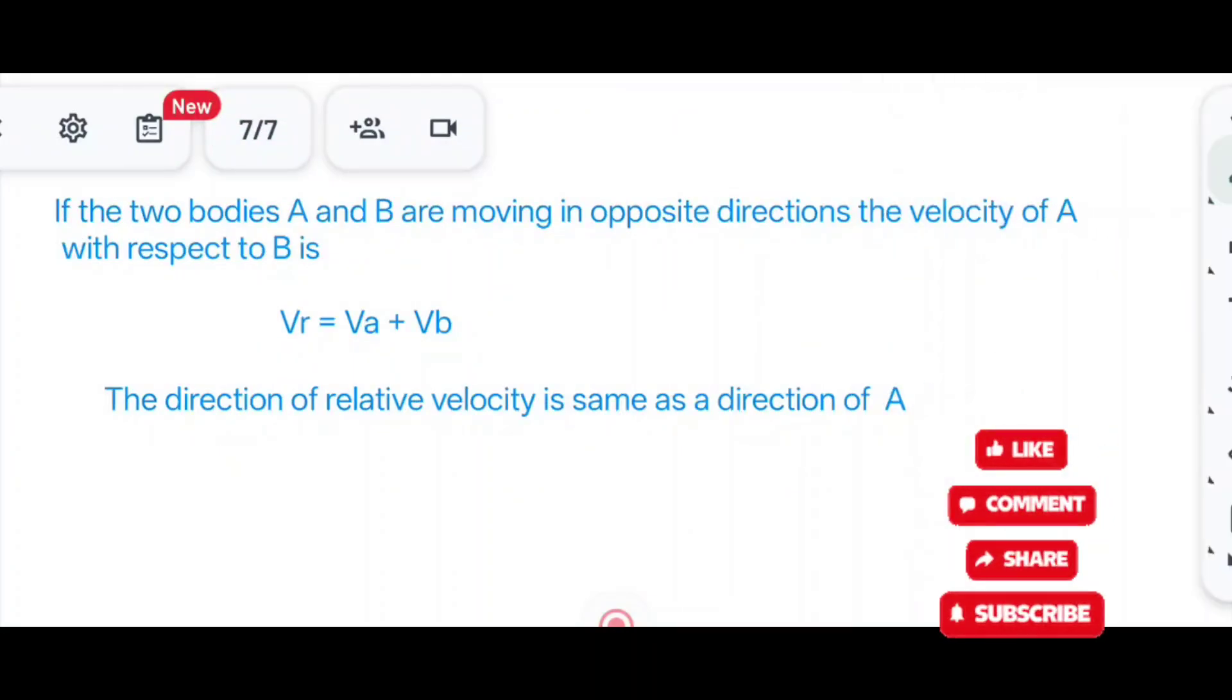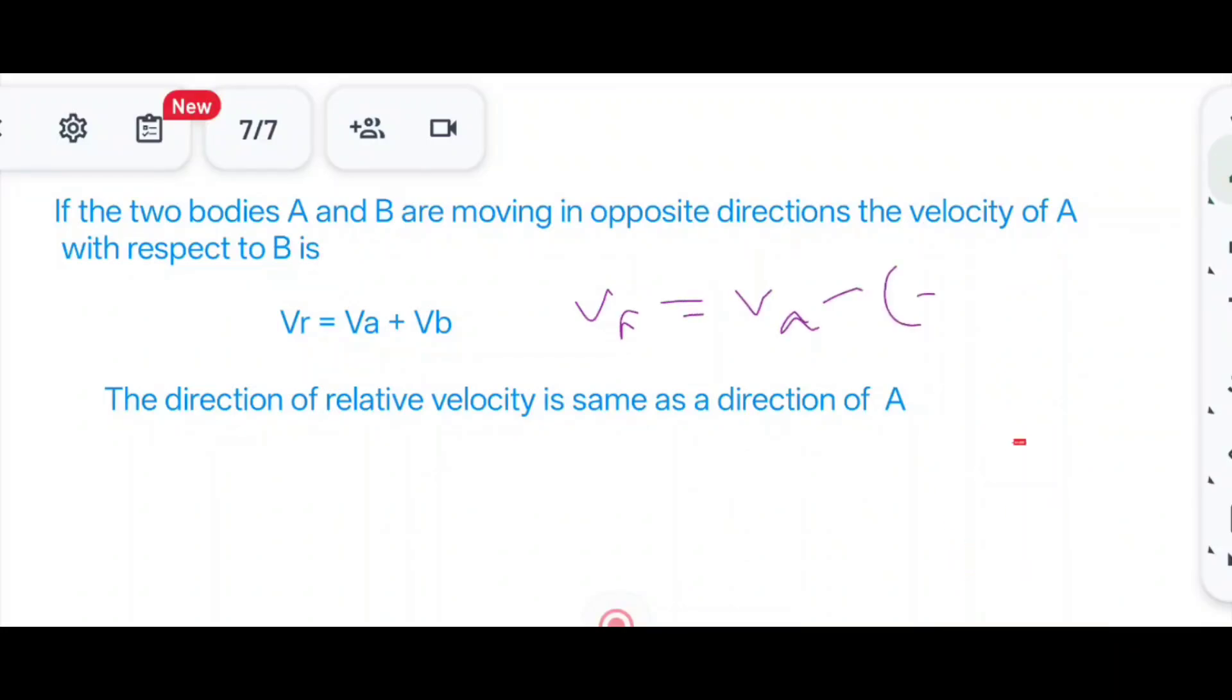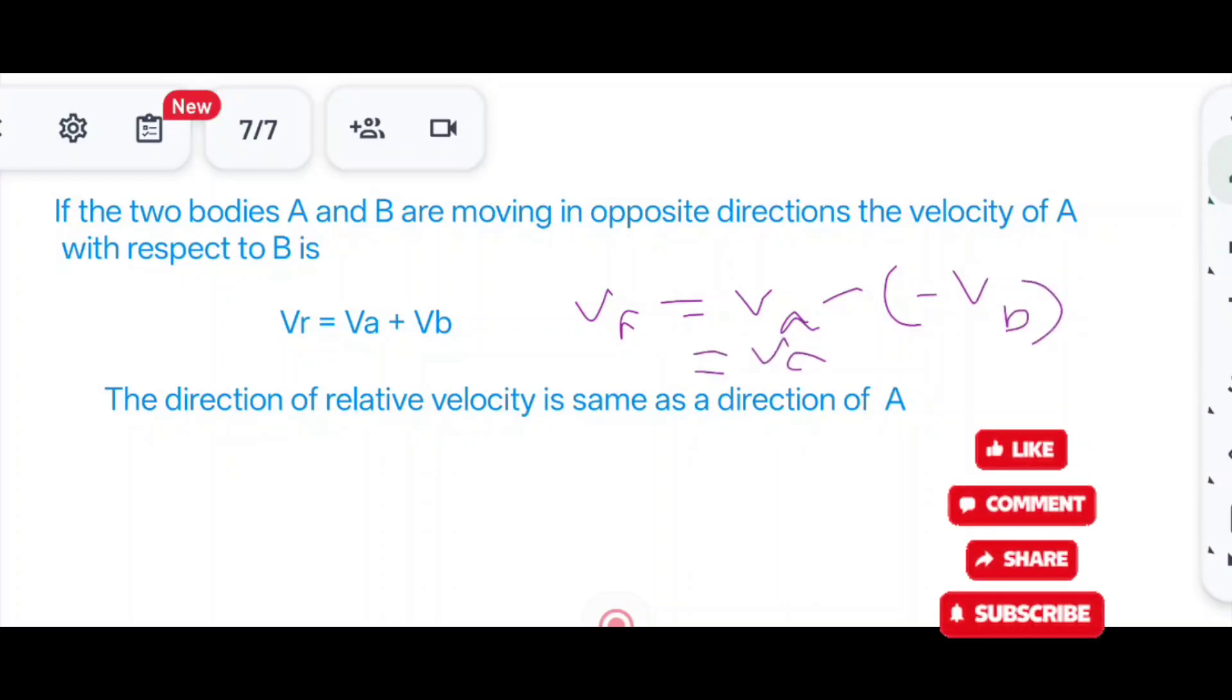If two bodies A and B are moving in opposite directions, then Vr equals Va minus negative Vb, because Vb is moving in the opposite direction. Hence Vr equals Va plus Vb. That's why we feel that the opposite train is moving faster than us. The relative velocity adds up, therefore Va plus Vb.